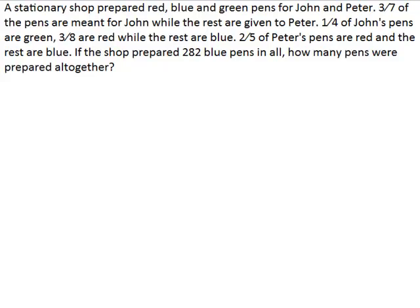We will use the branch method to find the fraction of green pens and the fraction of red pens. First, we will have the number of pens represented by one whole, out of which three-sevenths of the pens are meant for John, which means that four-sevenths of the pens are given to Peter.